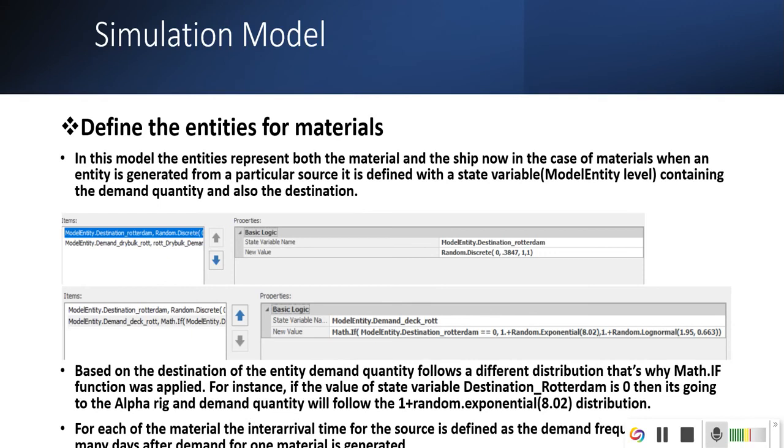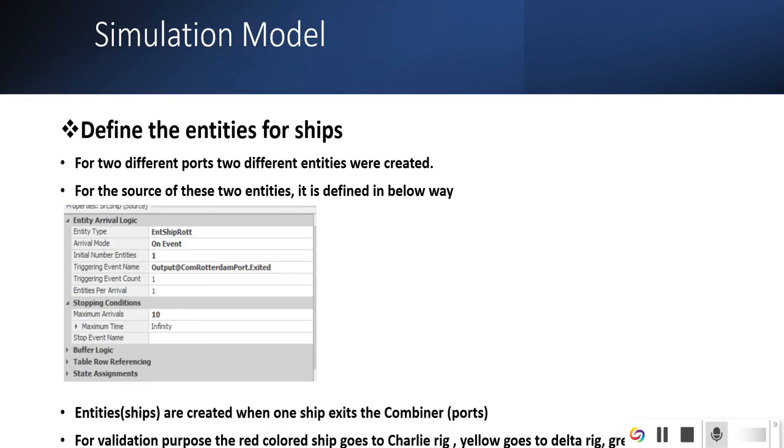Define entities for materials. Materials are defined as entities and there are two state variables. One defines which destination it is going to and another one the demand quantity for the material. Based on the destination, the demand varies. The demand distribution varies, and interval time also varies between different destinations.